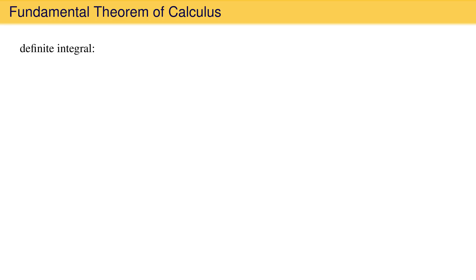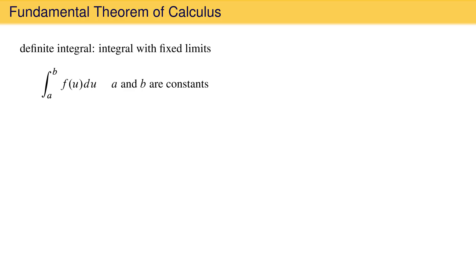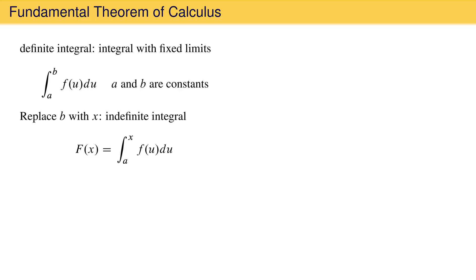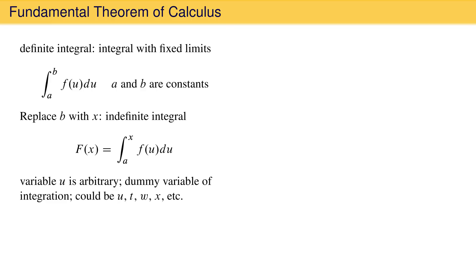So far we have talked about definite integrals — ones between fixed limits, written as the integral from a to b of a function times a differential width, where a and b are constants. If we replace the upper limit b with the variable x, we obtain an indefinite integral, and the result is no longer a value but a function of x that we call capital F. It is important to note that u is just a dummy variable of integration and could be anything — u, t, w, x, and so on — used for clarity so x is not confused with the upper limit.